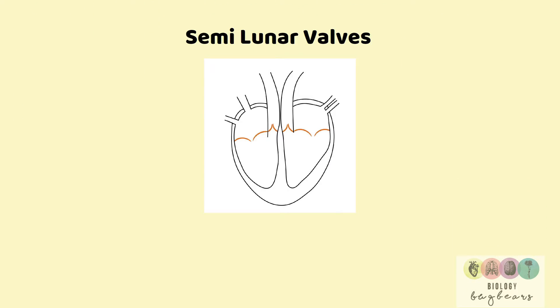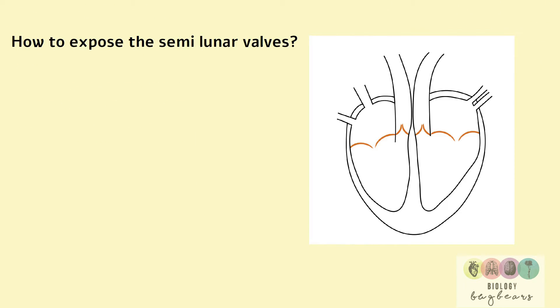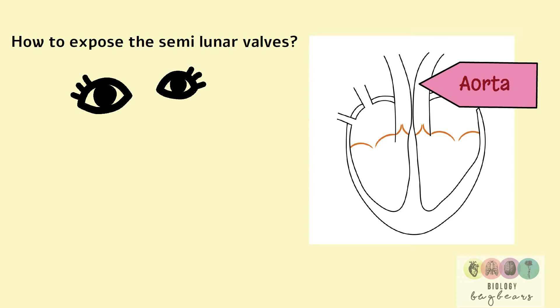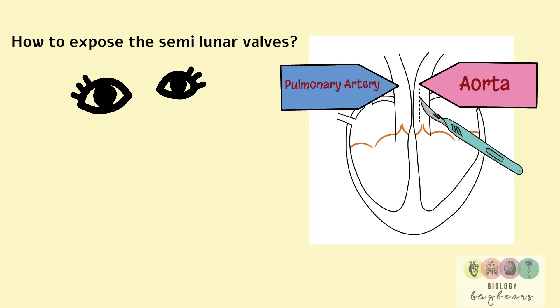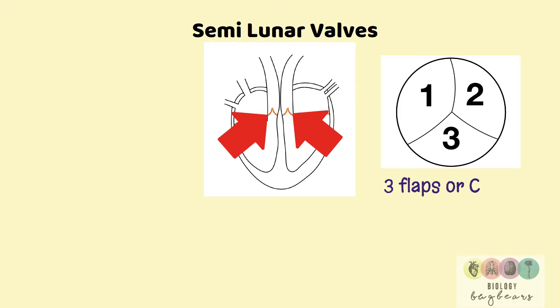The heart contains important valves. The semi-lunar valves are often examined, specifically their exact location. There is one semi-lunar valve at the base of the aorta and another at the base of the pulmonary artery. To expose the semi-lunar valves — often asked as part of the dissection question — you can either cut down through the aorta with your scalpel to visualize the first semi-lunar valve, or cut down through the pulmonary artery to expose the semi-lunar valve there. The semi-lunar valves have three cusps or flaps.